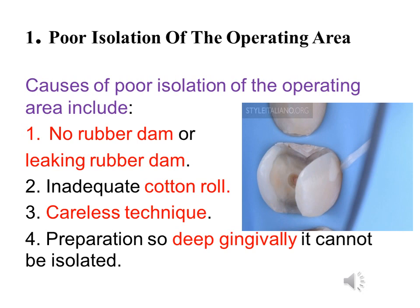What are the causes of poor isolation of the operating area or field? Number one, no rubber dam or leaking rubber dam. Number two, inadequate cotton roll or careless technique. Number three, preparation that is too deep in sub-gingival areas so isolation cannot be completed. This can result in fluid from the gingival sulcus, gingival fluid, or bleeding from the gingiva, leaving no complete isolation.